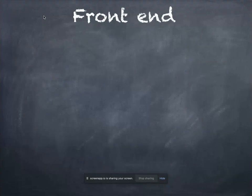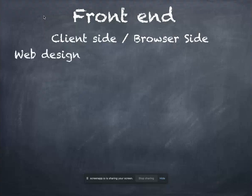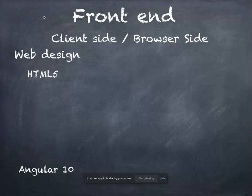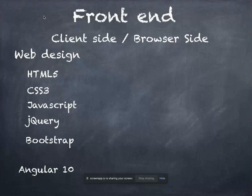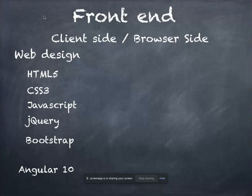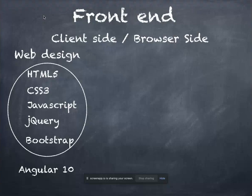In the front end, we have two types of courses available: one is a Web Design course and the other is Angular 10. In the Web Design course, we teach students HTML5, CSS3, JavaScript, jQuery, and Bootstrap — five technologies. After Web Design, a student can also do Angular 10, but since Angular requires knowledge of JavaScript, we cannot add a student directly to Angular 10. We first assign the Web Design batch and then Angular 10.